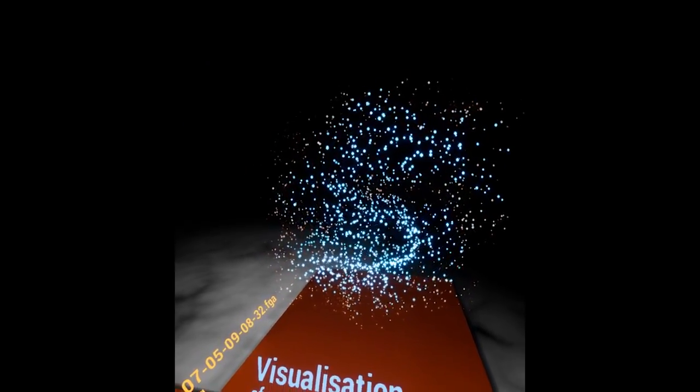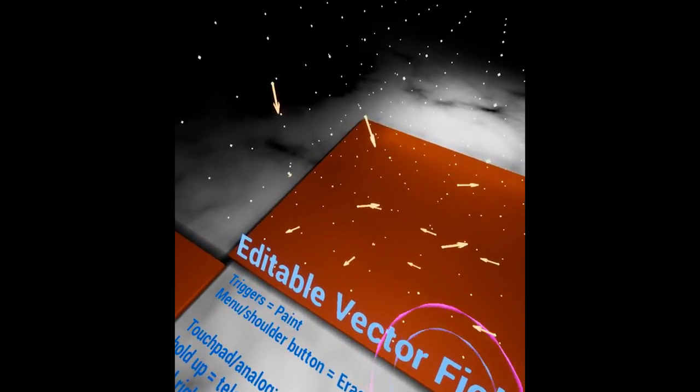Basically, each point on this grid imparts a force on nearby particles. Vector fields can be used to make some super cool effects, but they're not easy to make themselves.